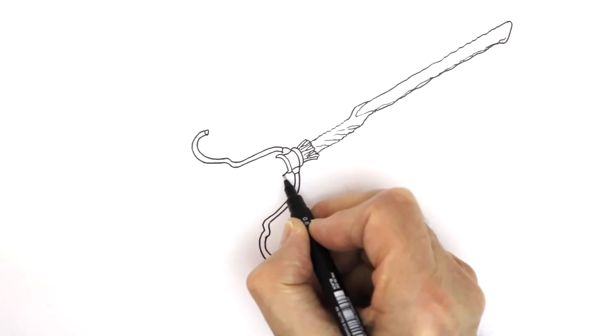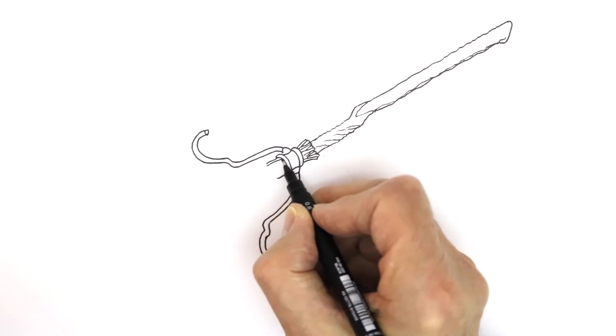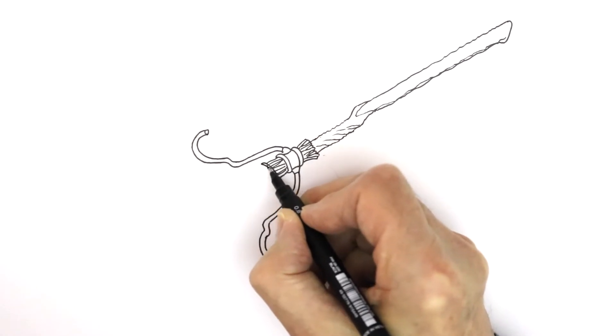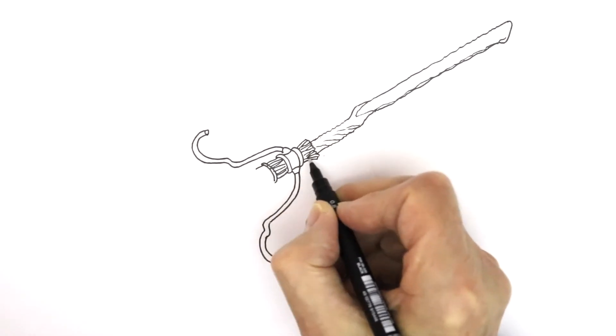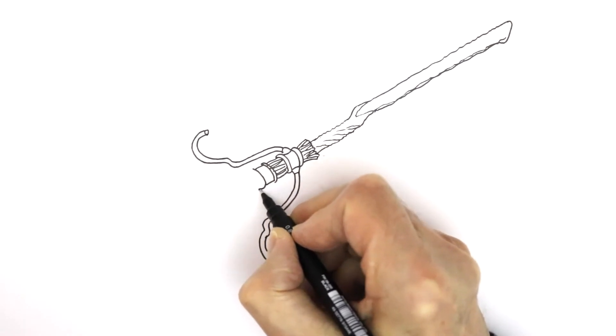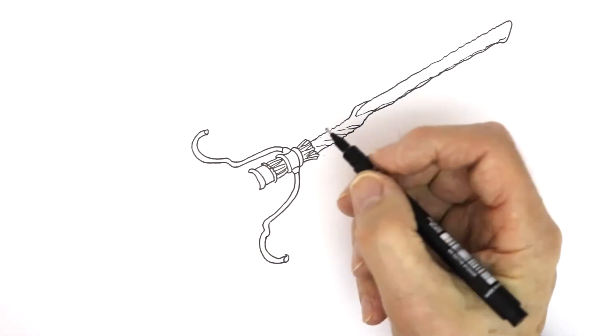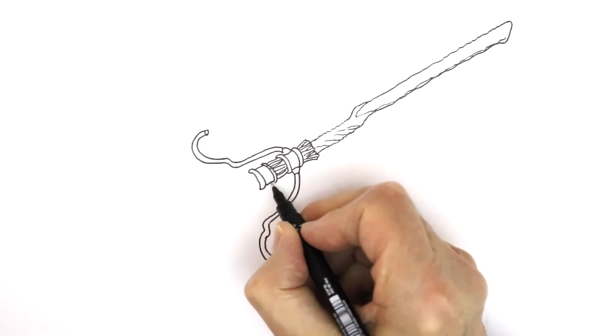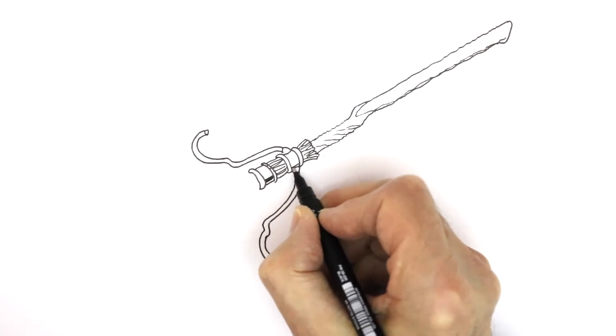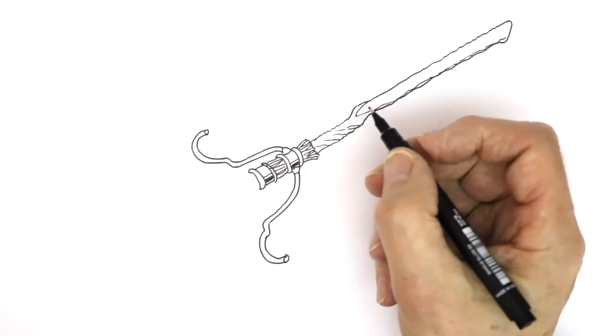And then we have another little bit where you see the twigs coming down to the next metal band, gripping the twigs. They're almost a bit like napkin rings, you know, that kind of shape like that. And because it's shiny, you can probably start putting a bit of dark shadow on the underside, a little line like that.